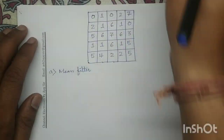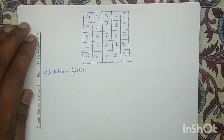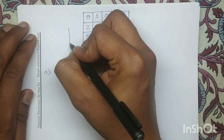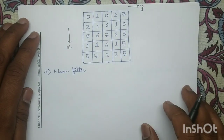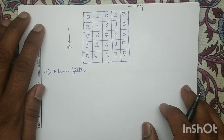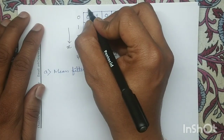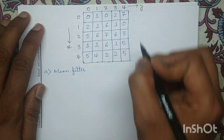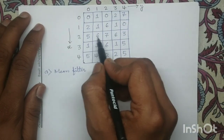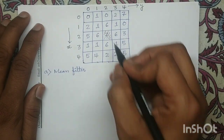First we will solve for the mean filter. In order to proceed, we have to identify pixel (2,2). In image processing, this direction is the positive x direction and this direction is the positive y direction. The indexing starts from 0: 0,1,2,3,4. Along y also the indexing starts from 0,1,2,3,4. So (2,2) means along x it is 2, along y it is 2. So (2,2) represents this center pixel which has the pixel value 7.